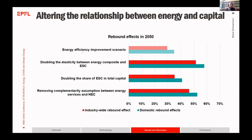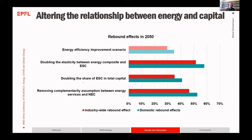Here you see the rebound effects at the industry-wide and domestic level for 2050, with the main scenario at the top. Doubling the elasticity of substitution between the energy composite and energy system capital quite strongly influences the results, because it allows firms to more readily substitute energy system capital for energy. This effect is much stronger than when we double the share of energy system capital in total capital stock, showing that the choice of elasticity of substitution is far more crucial than the share of energy system capital.